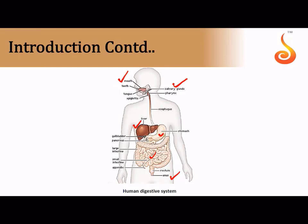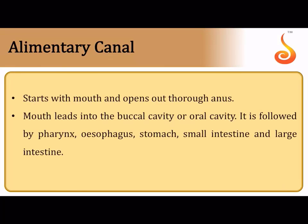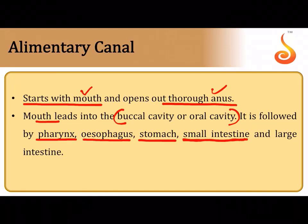These are mostly exocrine glands that pour their secretions into the lumen of the alimentary canal, mixing with food to aid digestion. The alimentary canal starts with the mouth and opens through the anus — making it a complete digestive system. Food passes through the buccal cavity, then is swallowed into the esophagus, then the J-shaped stomach, then the small intestine, then the large intestine, and finally undigested matter exits through the anus.